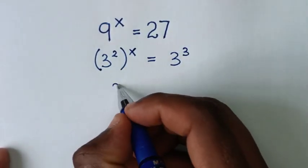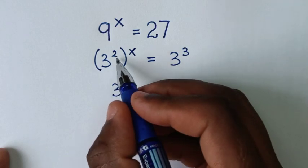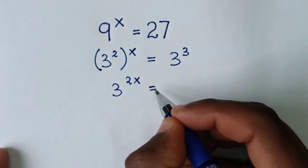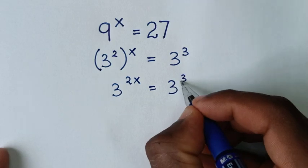Then it will be 3, then multiply these powers, 2 times x is power of 2x is equal to 3 power 3.